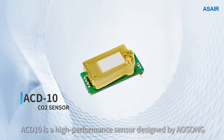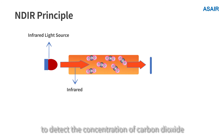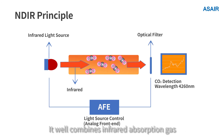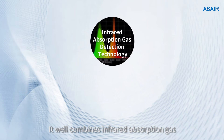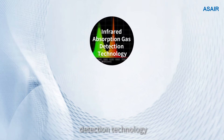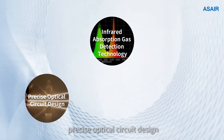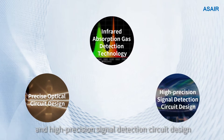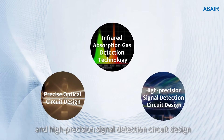ACD-10 is a high-performance sensor designed by Olson. Through the non-dispersive infrared principle to detect the concentration of carbon dioxide, it well combines infrared absorption gas detection technology, precise optical circuit design, and high precision signal detection circuit design.